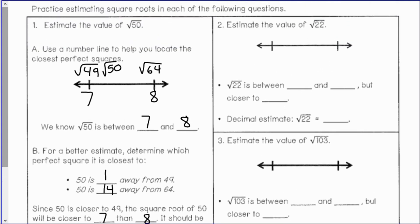Number 2: estimate the value of the square root of 22. Knowing my perfect squares, I know the square root of 22 is in between the square root of 16 and the square root of 25. The square root of 16 is 4 and the square root of 25 is 5.